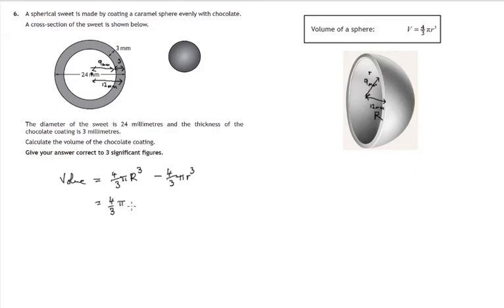4 thirds times pi times 12 cubed minus 4 thirds times pi times 9 cubed. So that's the outside sphere's volume minus the inside sphere, the empty space.